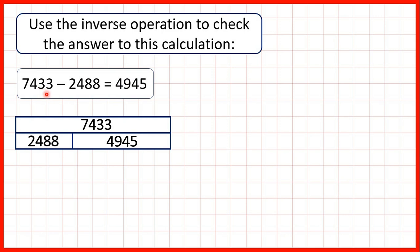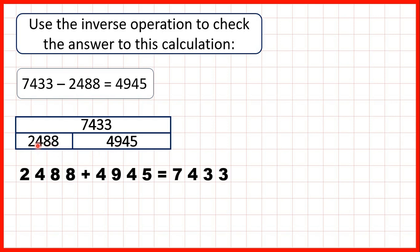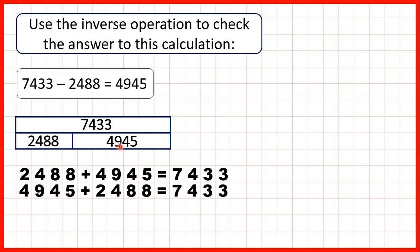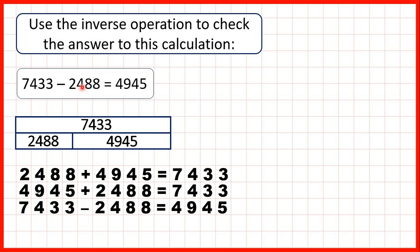We can represent this calculation with a bar model, with our minuend — the number we're subtracting from — on top, and our subtrahend and difference in the bars below. This bar model tells us that if we add 2,488 and 4,945, we should get 7,433. So if you have a subtraction question, you can check it by adding your subtrahend and your difference, which should give you your minuend. This bar model also tells us that 4,945 plus 2,488 gives the same total, because with addition, order doesn't matter.